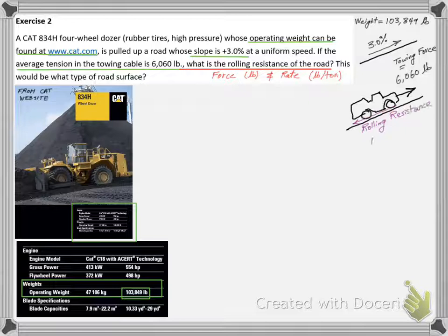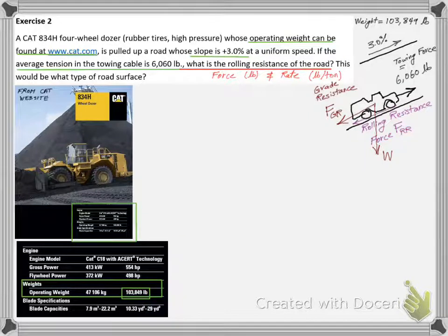Let's start analyzing the dozer equilibrium by displaying the rolling resistance force FRR applied on its body diagram. The towing force is also trying to overcome the grade resistance force FGR, which is the grade component of the dozer weight.